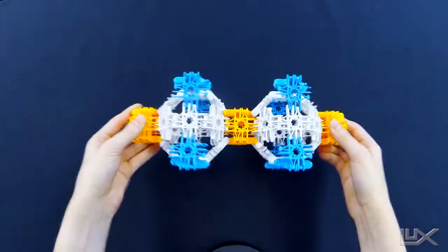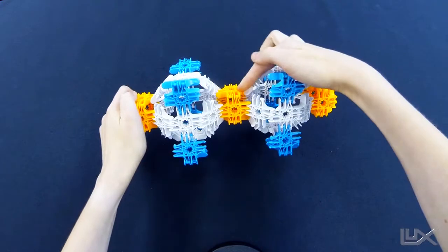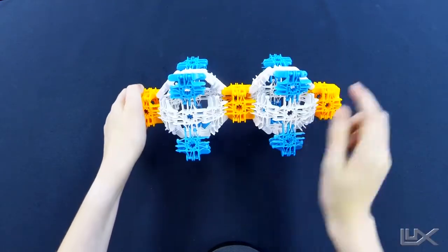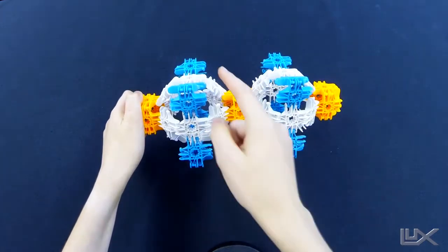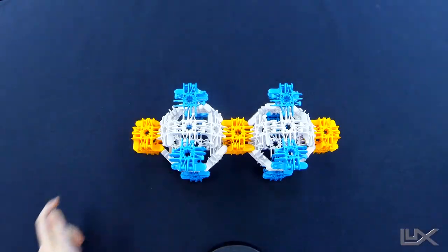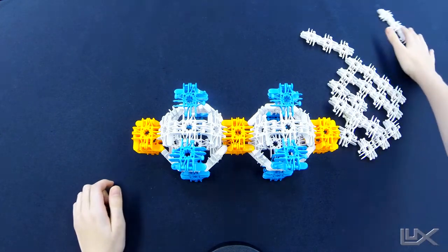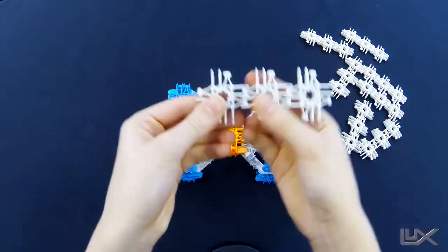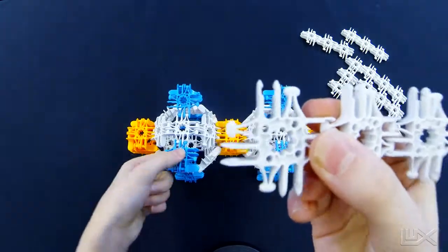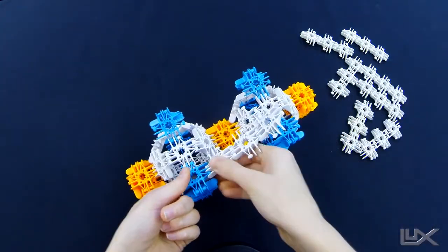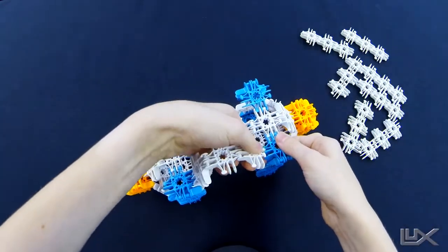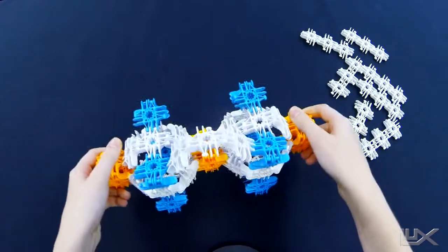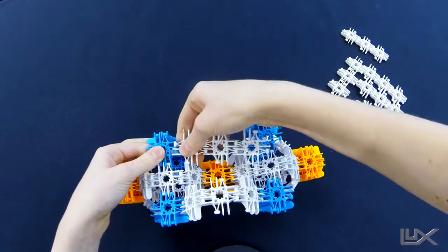Once you have that, you can see that these whites make arcs from one orange to the other. We're going to be doing the same thing, but from one blue to the other. So you're going to need eight white strips of three. Make sure the bolt side is out. Then just attach it to one, arc it over, and go to the other side. Then go all the way around.